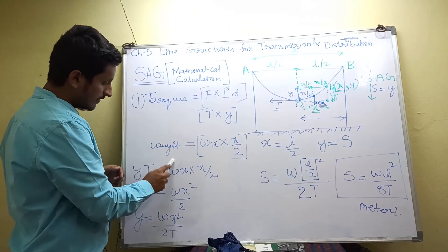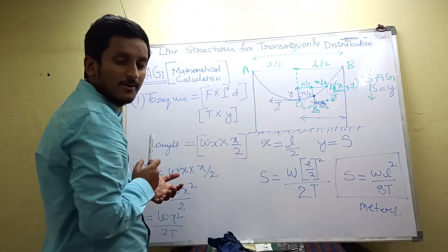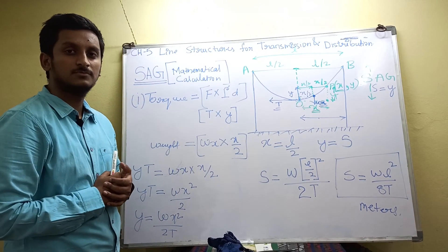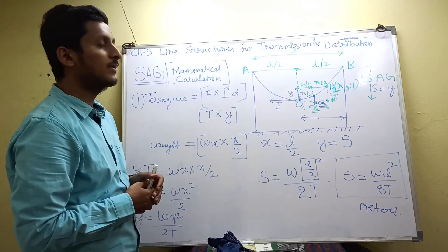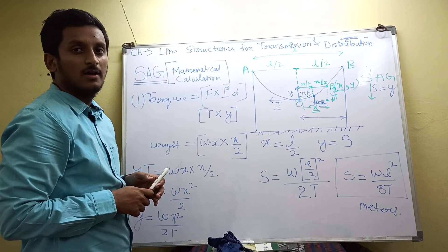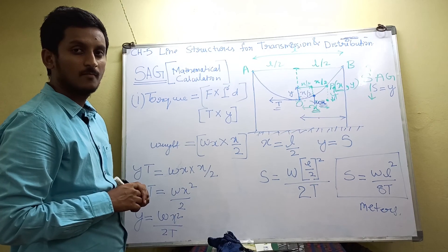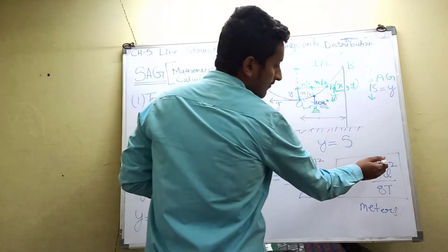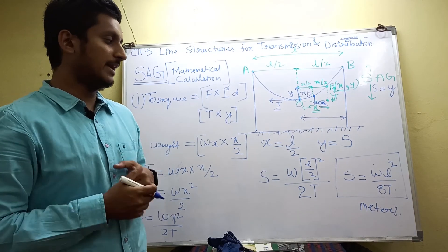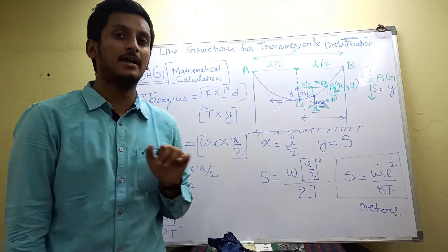We derived this equation in order to maintain the conductor stationary — if the sag is appropriate, the conductor is stable, which is why we equated both forces. Practically, this ideal scenario may not always hold because the tower heights may differ due to ground level variations. The sag is affected by the weight of the conductor, the length of the span, and the tension in the conductor. Sag should be fixed in such a way that everything is perfect.